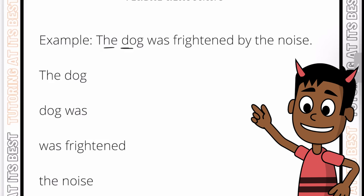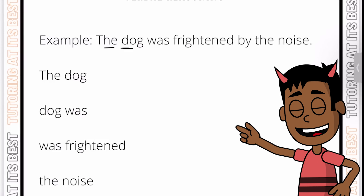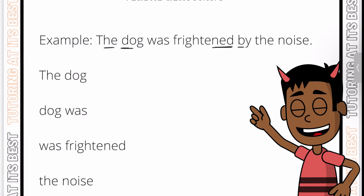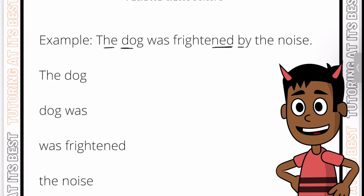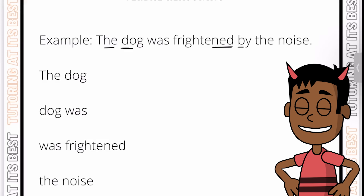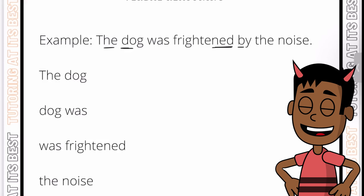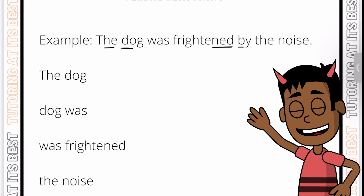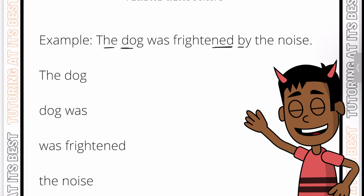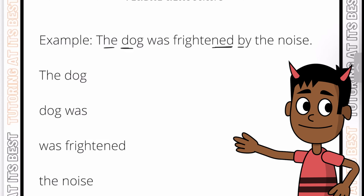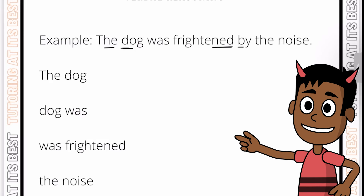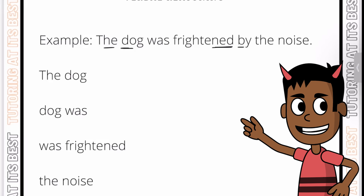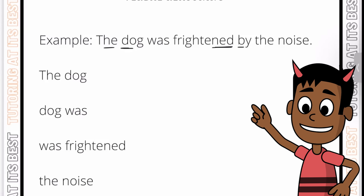As the hidden word is always a four-letter word, it could be the last three letters and the first letter of a pair of words. A good strategy is to look at the whole sentence and see if the answer jumps out at you. If not, go through each pair of words systematically — look at the last three letters of each word and the first letter of the next word, then move along one at a time until you find the answer.